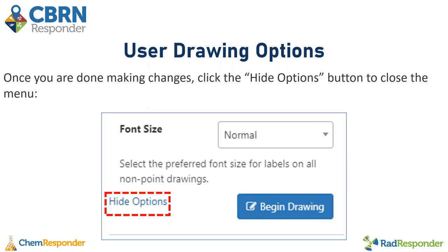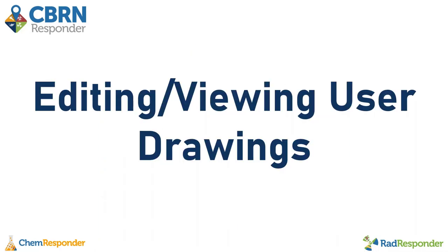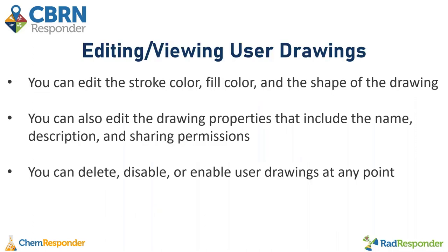Once you're done making these changes, click the hide options button to close the menu. Now I'm going to show how you can edit, view, disable, or delete user drawings. You can edit the stroke color, fill color, and the shape of the drawing. You can also edit just the drawing properties, which include the name, description, and sharing permissions. And you can delete, disable, or enable user drawings at any point.